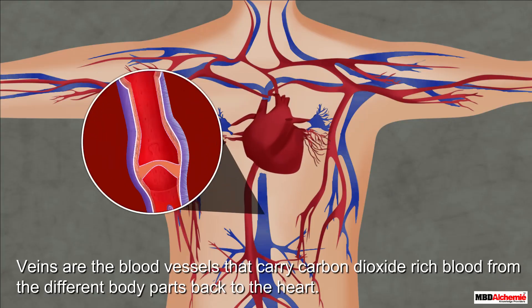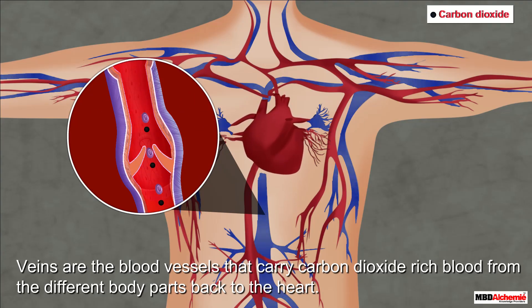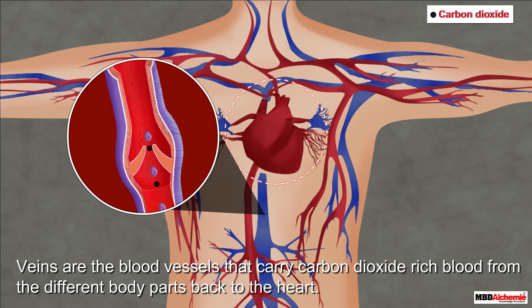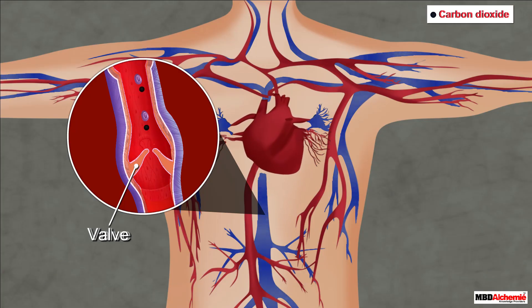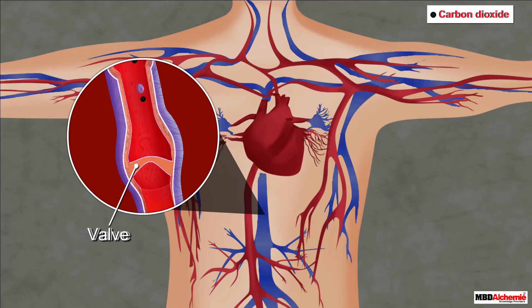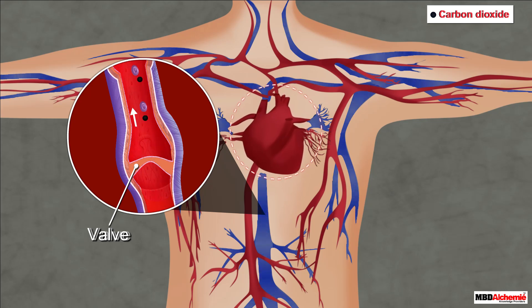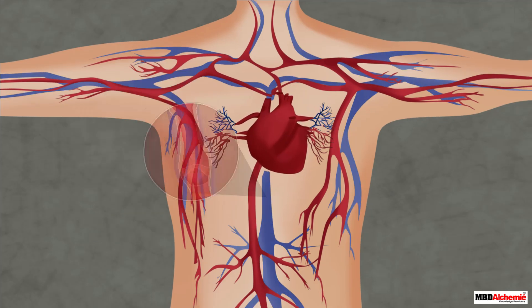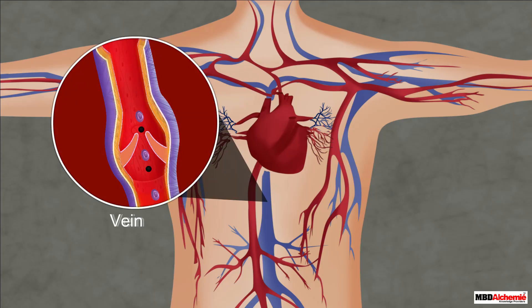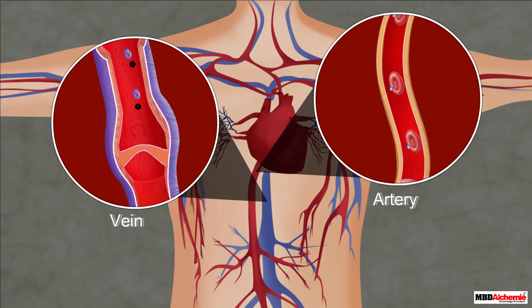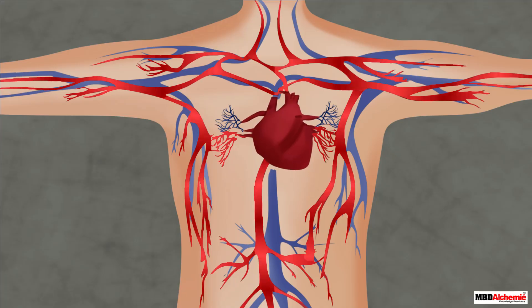The next type of blood vessel is the vein. Veins are the blood vessels that carry carbon dioxide-rich blood from the different body parts back to the heart. Veins have valves that regulate blood to flow only in one direction — towards the heart. The walls of the veins are thinner compared to the arteries.